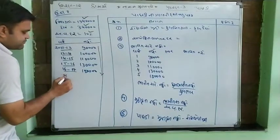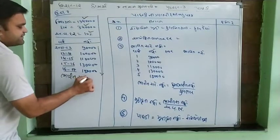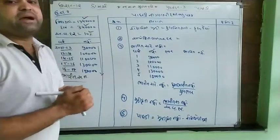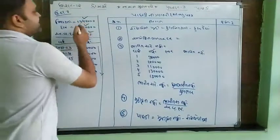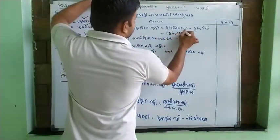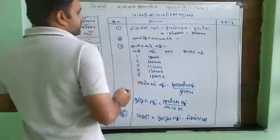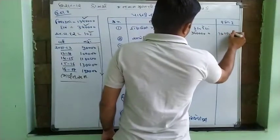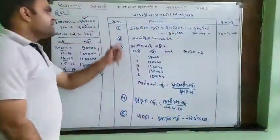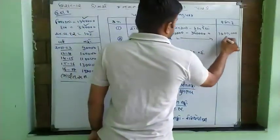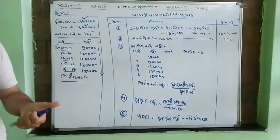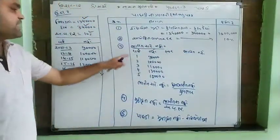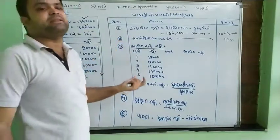આપણે એક સિંપલ વસ્તુ કઈ સકીએ — ભારીત સરરાસ નફો. સૌથી પહેલો મુદ્દો: રોકેલી મૂડી બરાબર કુલ મિલ્કત માઈનસ કુલ દેવા. કુલ મિલ્કત આપણી કેટલી છે? તેર લાખ ને ચાળીસ હજાર. તો બરાબર: તેર લાખ ચાળીસ હજારમાંથી ઘટાવો — બાદ કરો — તો વધે છે દસ લાખ રૂપિયા.